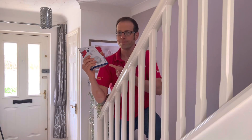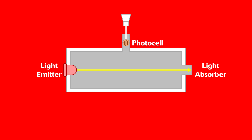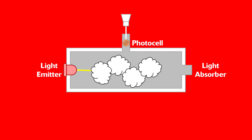So how do optical detectors work? Inside the detector there's a small chamber with a light source on one side, and a photocell sitting off to another side at an angle to the light source. Under normal operating conditions with no smoke, the light hits the far side of the chamber, is absorbed, and the photocell isn't triggered. If large particles of smoke from a smouldering fire enter the chamber, the light bounces off the smoke particles, hits the photocell, which is activated and triggers the alarm.